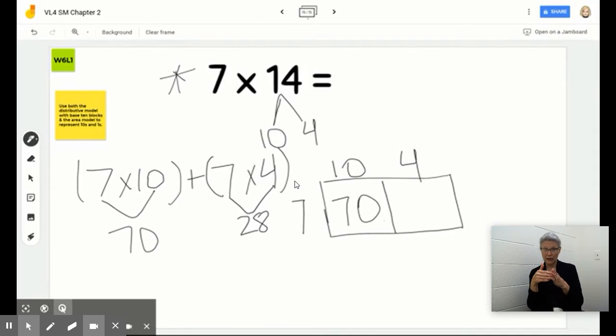But again, that's not my entire product of my question 7 times 14. That's just a part, so that's a partial product. 7 times 4 is 28. Now we need to go ahead and add our partial products together. You can kind of envision that there is like a plus sign.